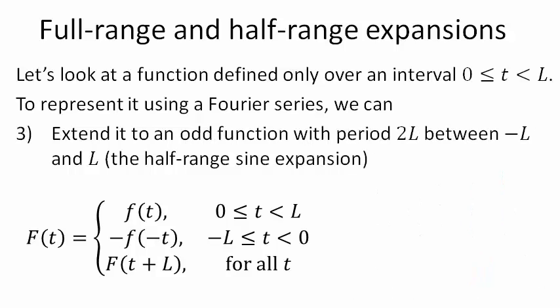There is a third method we could take, and that is to extend the function not to an even function, but to an odd function. So, instead of defining the function to be f of negative t, which would make it an even function, we define as negative f of negative t, and that makes it an odd function.